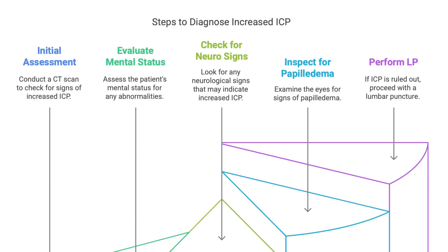The guide says first rule out increased ICP because, as mentioned, doing an LP when the pressure in the skull is high can be dangerous. So if there are signs of increased ICP — like altered mental status, neurological signs, or papilledema — do a CT scan of the head first. If they don't think it's increased ICP, then do an LP to look at the spinal fluid.